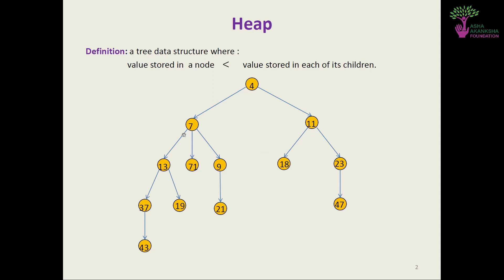As we go down the tree the values increase. There is also a version called a max heap, where the value stored in a node is greater than the value stored in each of its children. The left and right subtrees are not related to each other — it's just that 7 and 11 are both greater than 4. For node 7, its children 13, 71, and 9 are all greater than 7, which is valid. This example is not a binary heap because node 7 has three children.